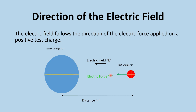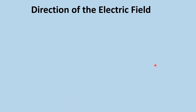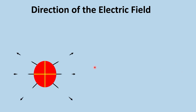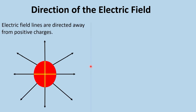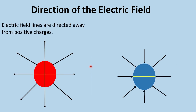So if a positive test charge is placed anywhere around a negative source, the electric field will always point towards the negatively charged source. As shown in the figures: for a positive source, the electric field points away — it diverges; for a negative source, it points inward — it converges.